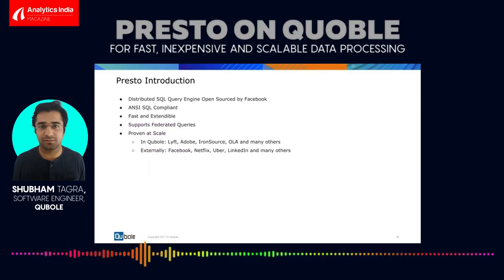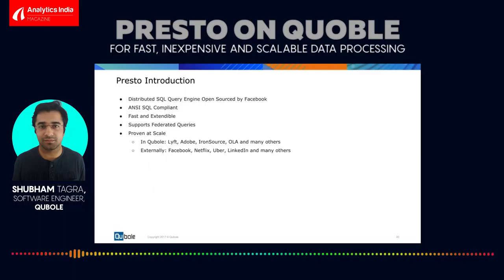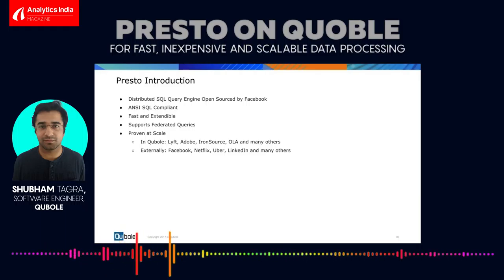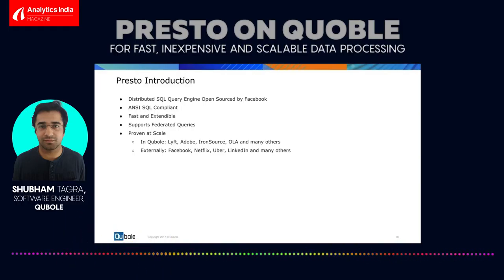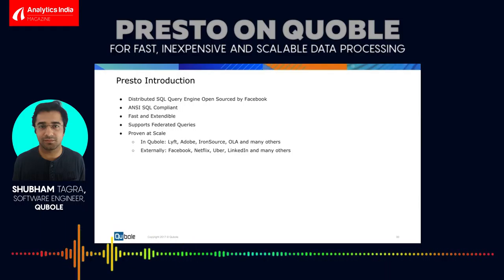I'll start with a Presto introduction. Presto is a distributed SQL query engine open-sourced by Facebook in 2013. It is a completely ANSI SQL compliant system capable of querying multiple data sources. This enables users to write federated queries where they can talk to multiple data sources like Hive, MySQL, Kafka, and do powerful things like cross-joins across these data sources.